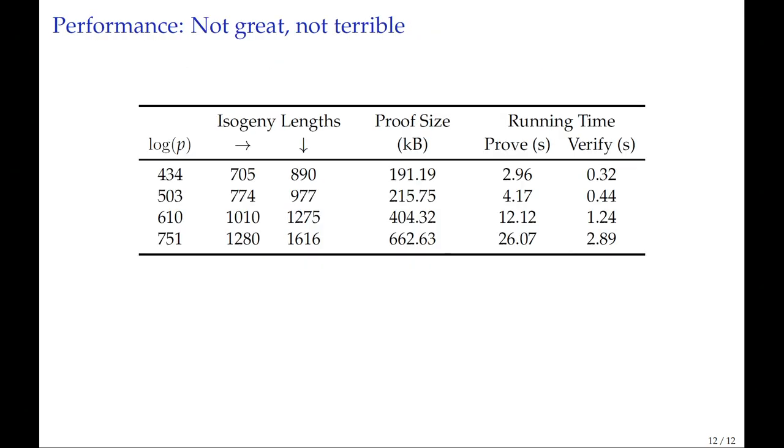We actually implemented this. We considered the four SIDH primes that were used for SIDH, but this works for any prime of your choice. You can see here the length of the isogeny works both for the horizontal isogenies and the vertical one, and these are significantly longer than the isogenies used in SIDH. What we get is that the proof sizes are just a few hundred kilobytes, not extremely too large, and the running times are also somewhat compact. For the smallest prime, proving is a couple of seconds and verification is a few milliseconds, whereas this scales to about 30 seconds and two seconds to prove and verify.